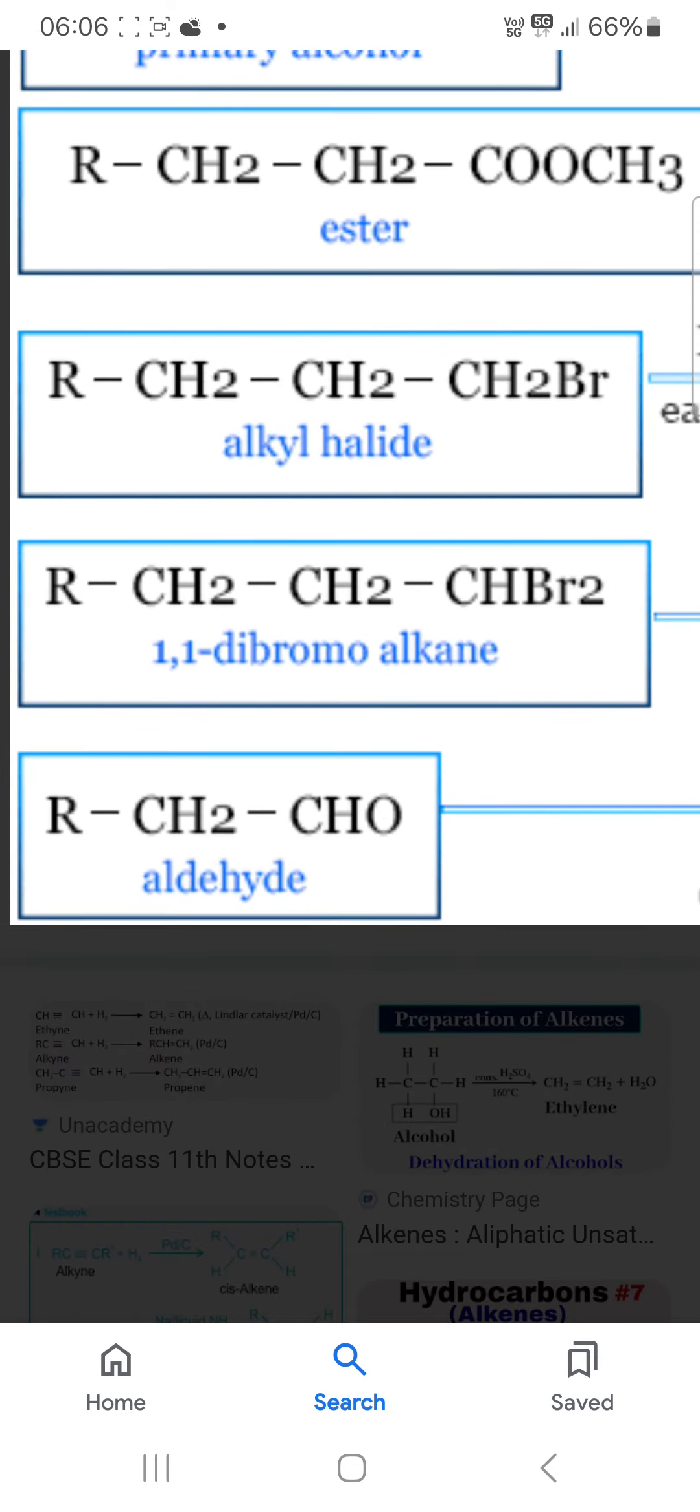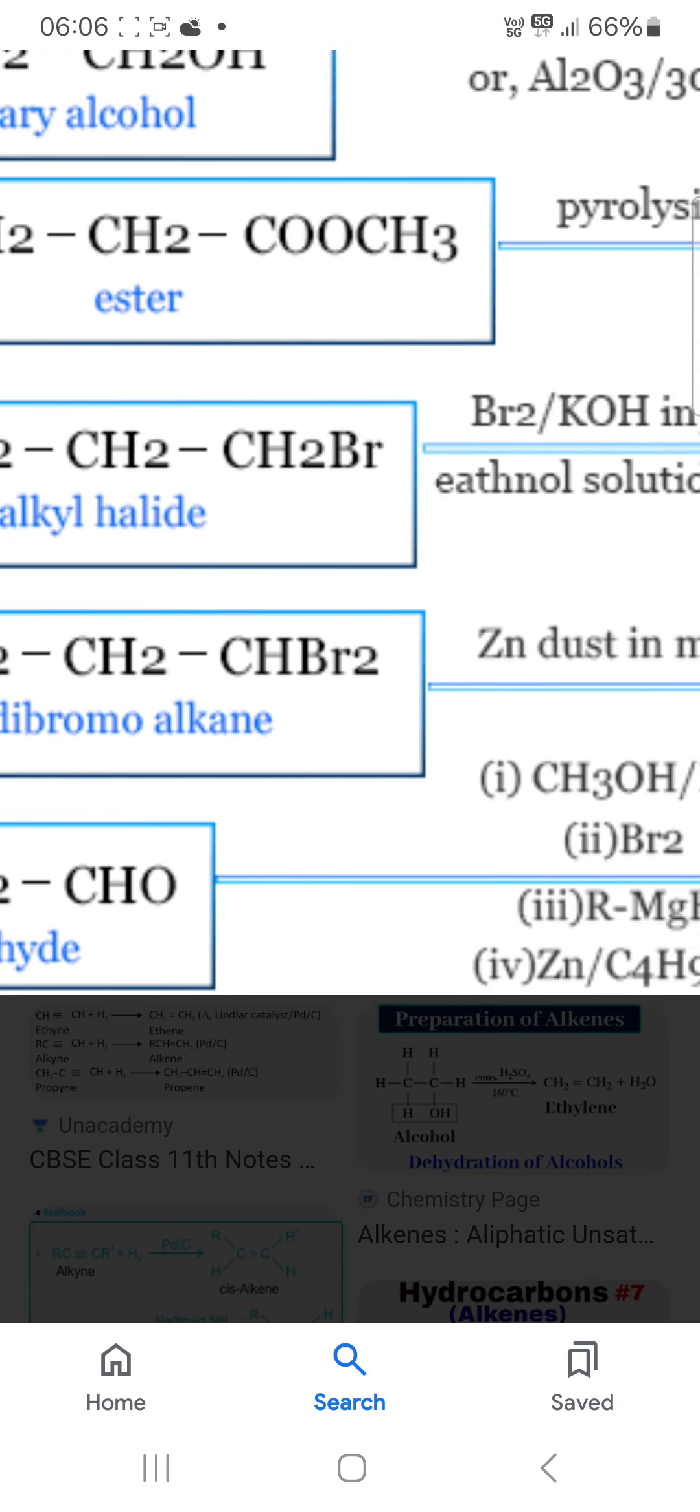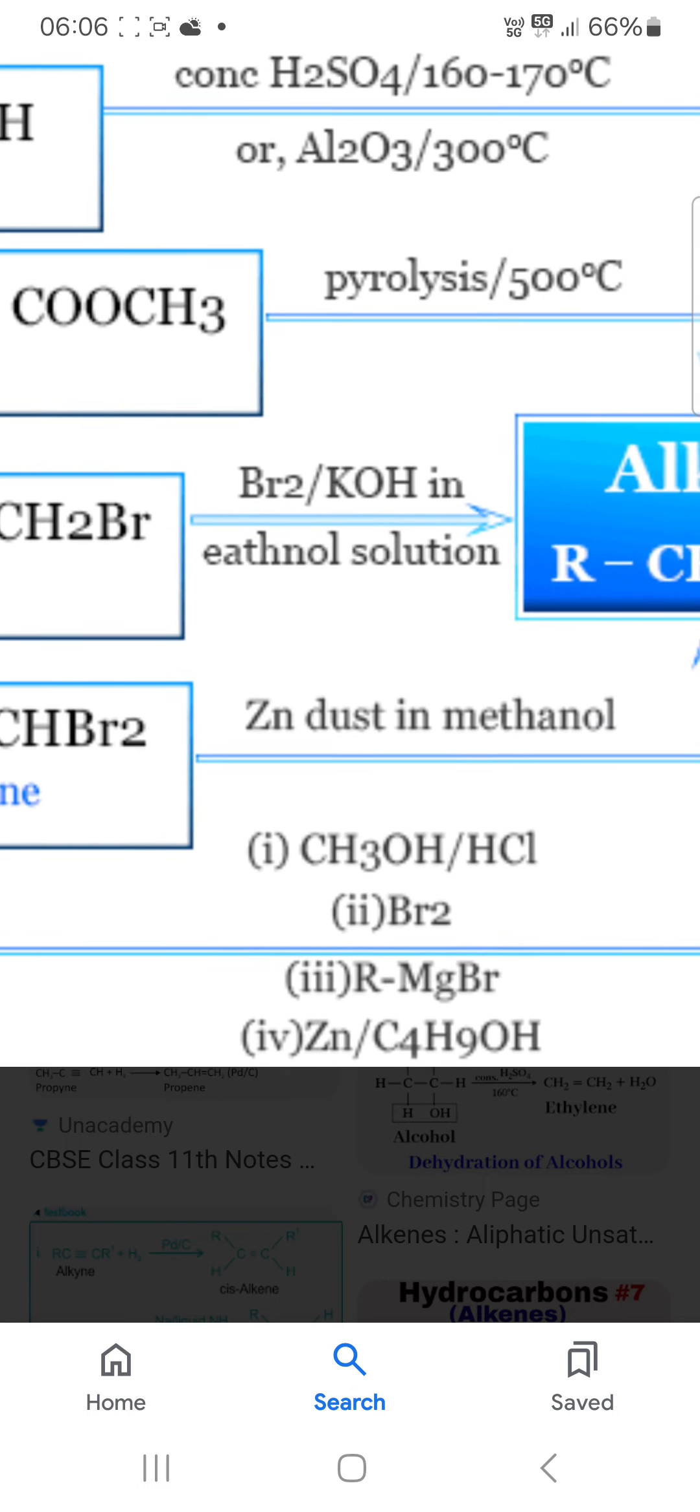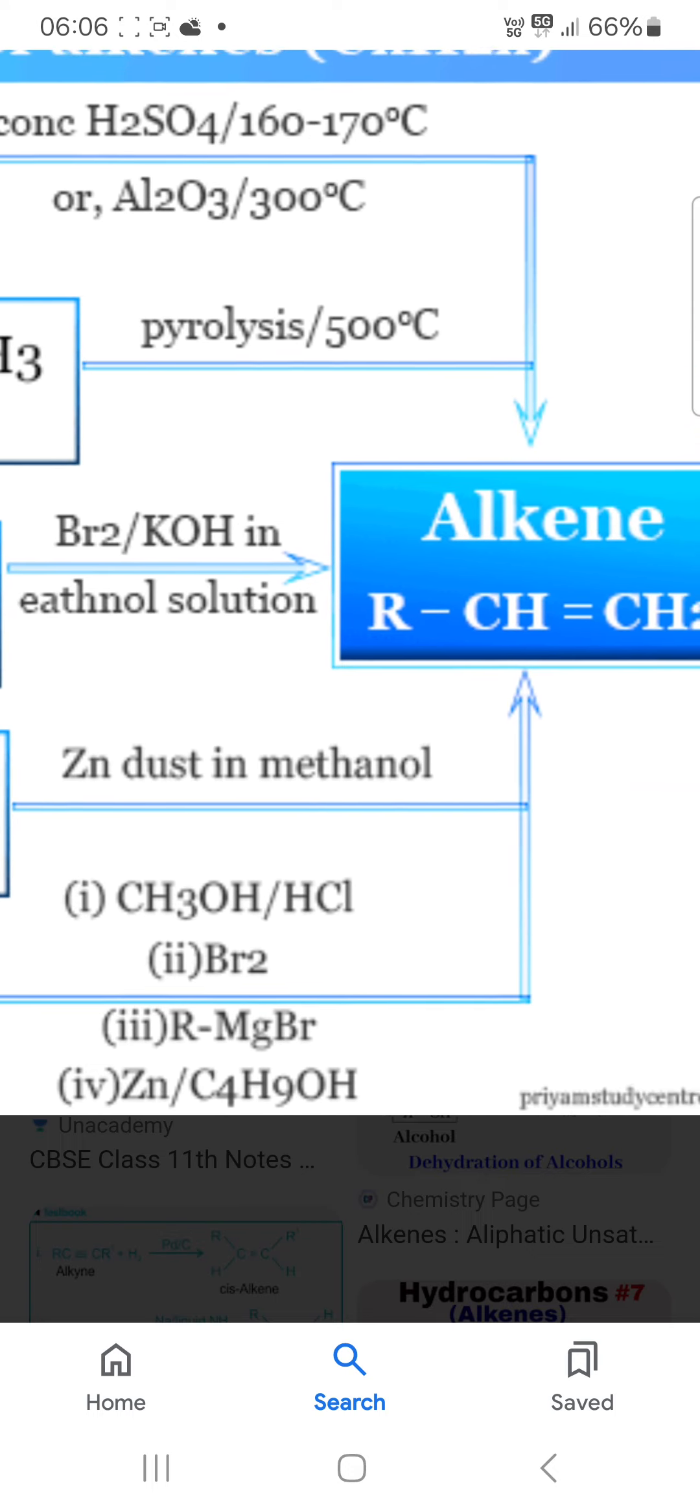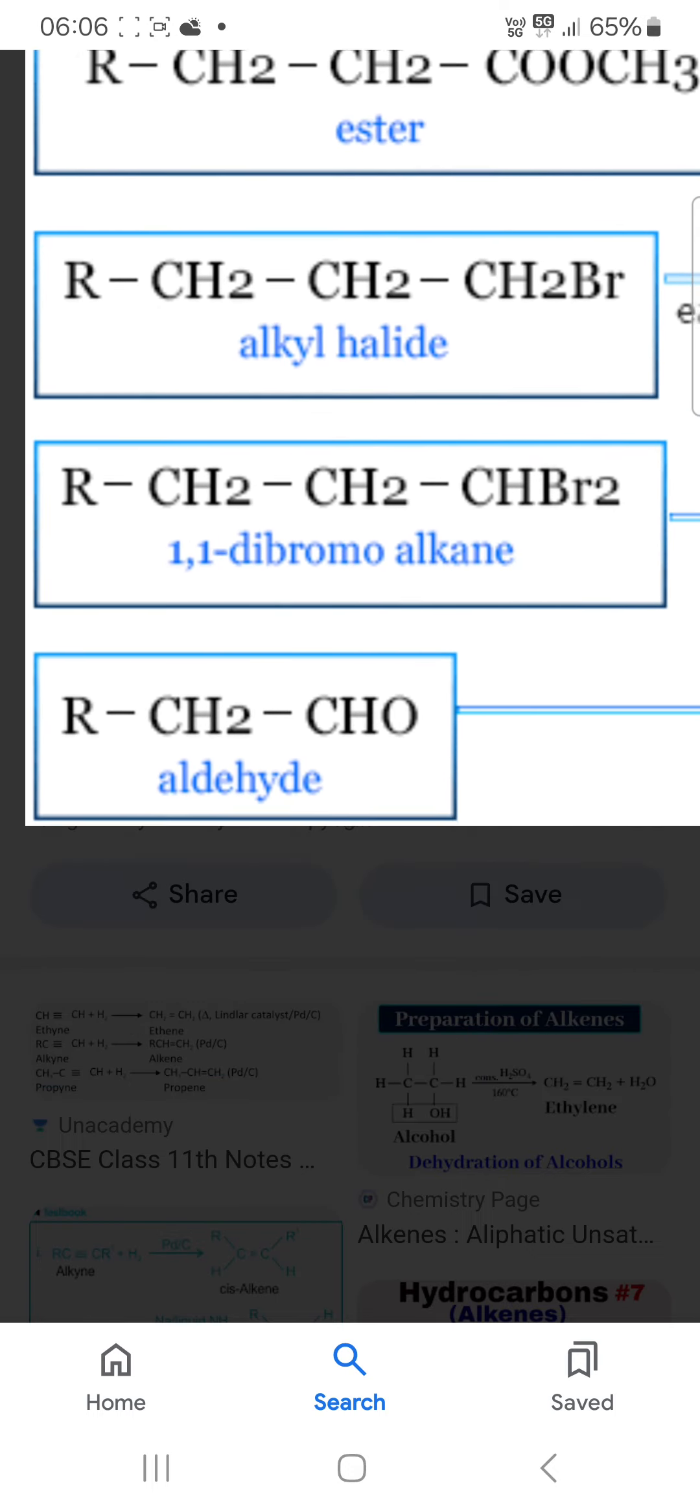And another route is 1,1-dibromo alkane with zinc dust in methanol. You will get this alkene.